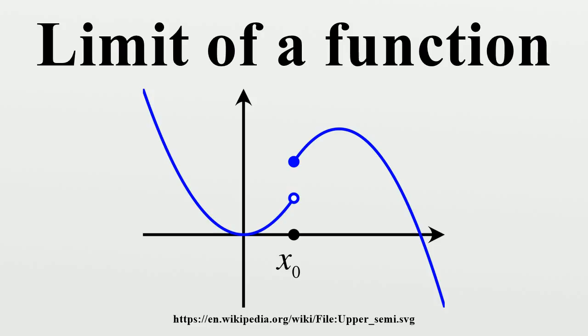A function is continuous at a limit point P of its domain if and only if F(P) is the limit of F as X tends to P.